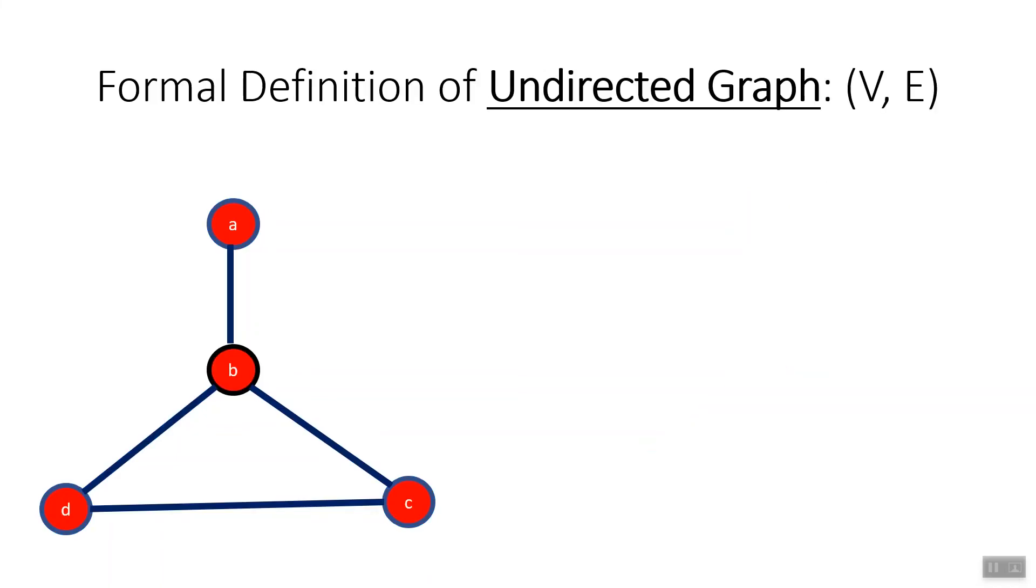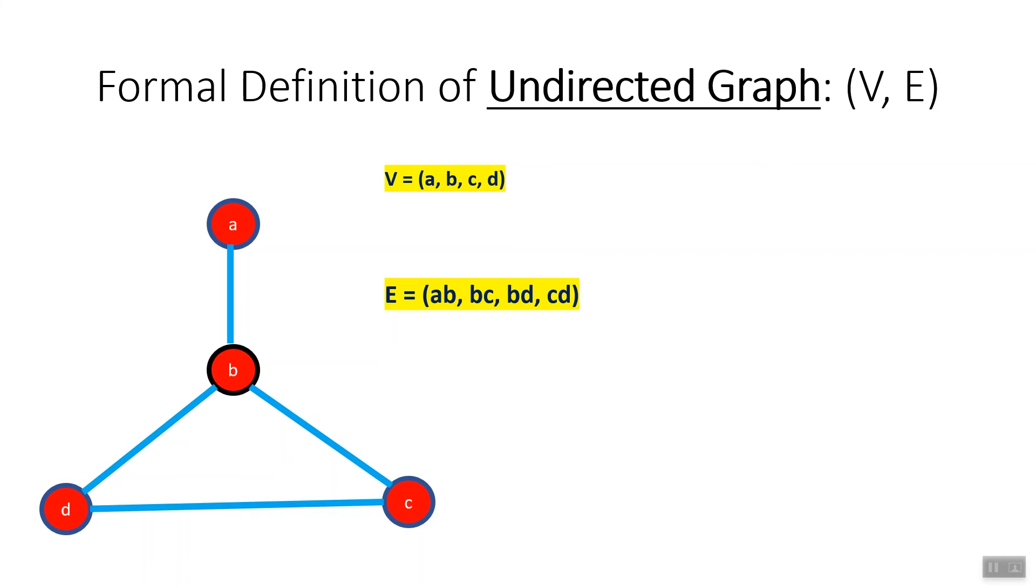Formally, an undirected graph is defined as a pair of sets V and E, where V is the set of vertices, and E is the set of unordered pairs of vertices, representing the two-way connections between vertices in the graph.